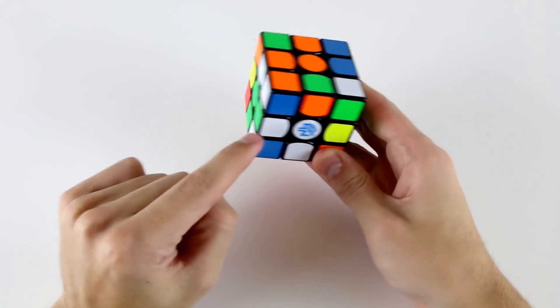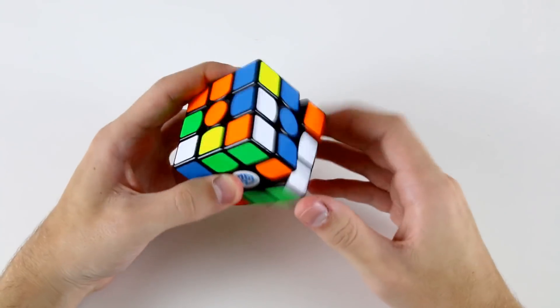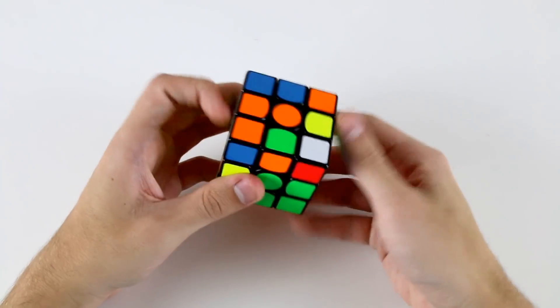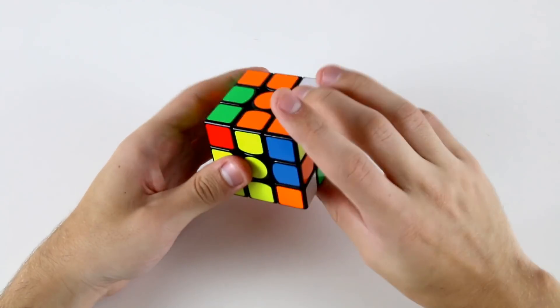Now the next F2L pair that I would do is this corner on this edge. However, I would do it using keyhole like that, and I would rotate to do these two back there, then rotate again to do these two.